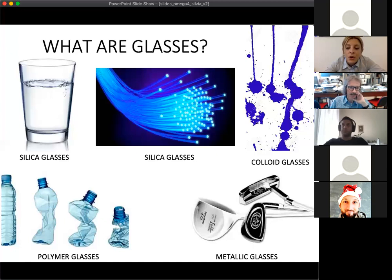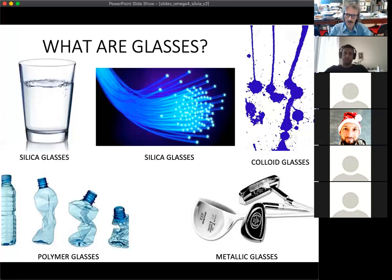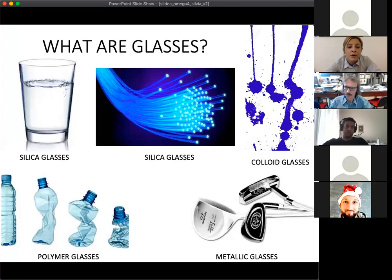There are not just silica glasses; there are many kinds of glasses. For example, PET bottles are basically made of polymers which are in entangled configuration. These are called polymer glasses. Also, metals can form glasses if they are well prepared, and these metallic glasses are considered as the next generation materials because they are more tough compared to standard crystalline metals.